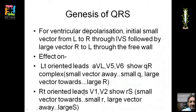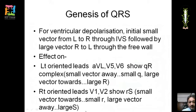For right-sided leads like V1 and V2, we get an RS pattern. The first small vector moves toward the right-sided leads producing a small R wave, then the larger vector moves away toward the left, producing a large negative deflection — an S wave. So left-sided leads show QR and right-sided leads show RS pattern normally.